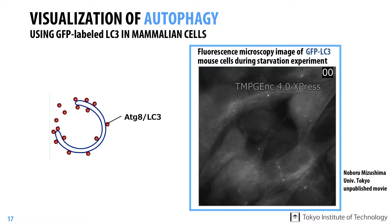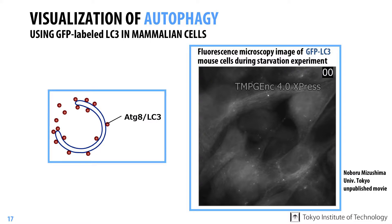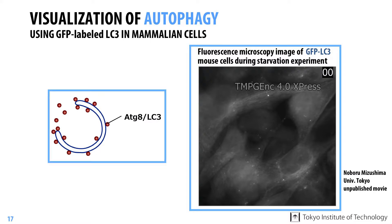A protein named ATG8 in yeast or LC3 in mammals, which is encoded by one of the ATG genes, was found to exist on forming and complete autophagy-deficient membranes.